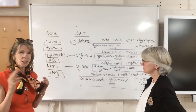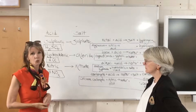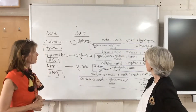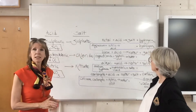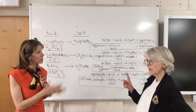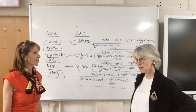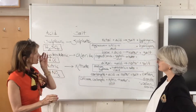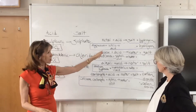Moving on to the general equations — once we've learned the general equations it's easy to do the word equations. The first one: metal plus acid gives salt plus hydrogen, which is MASH. For example, I'm choosing magnesium as the metal and nitric acid.